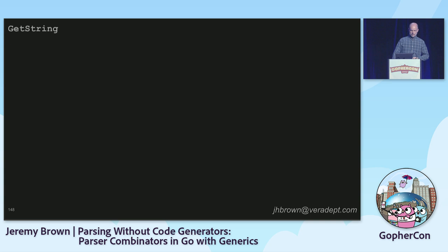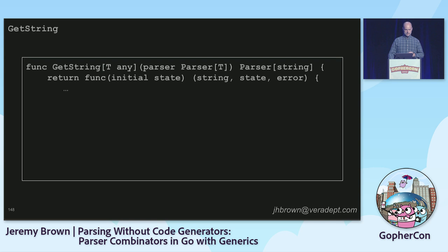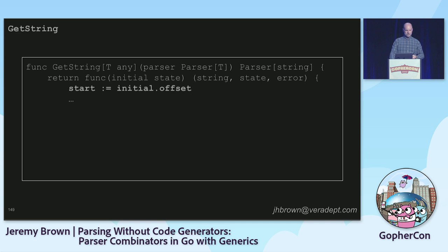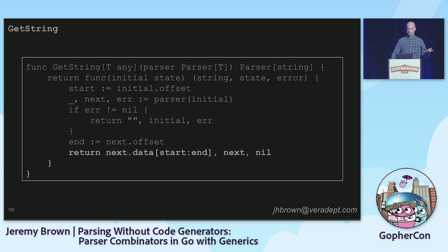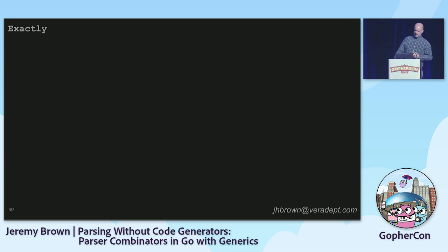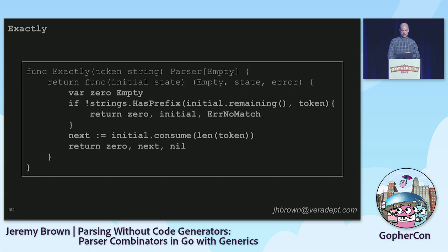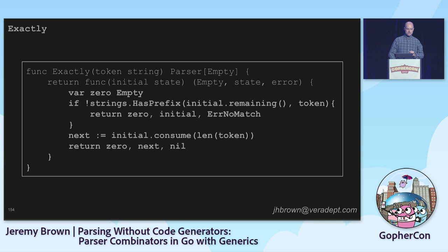`getString` takes a parser of any type and returns a parser that returns a string — specifically the string matched by the underlying parser. It returns a function which is a parser. We capture the initial offset, run the underlying parser (throwing away the return value), get the end offset, and that's our return value: the slice of the string from start to end. That's what was matched by the underlying parser, whether it was a single parser or a very long sequence of stuff. `exactly` is a function that checks if the input begins with the entire character sequence passed as argument — if yes, it consumes exactly that many bytes and returns a new state and an empty value; if not, it returns an error.